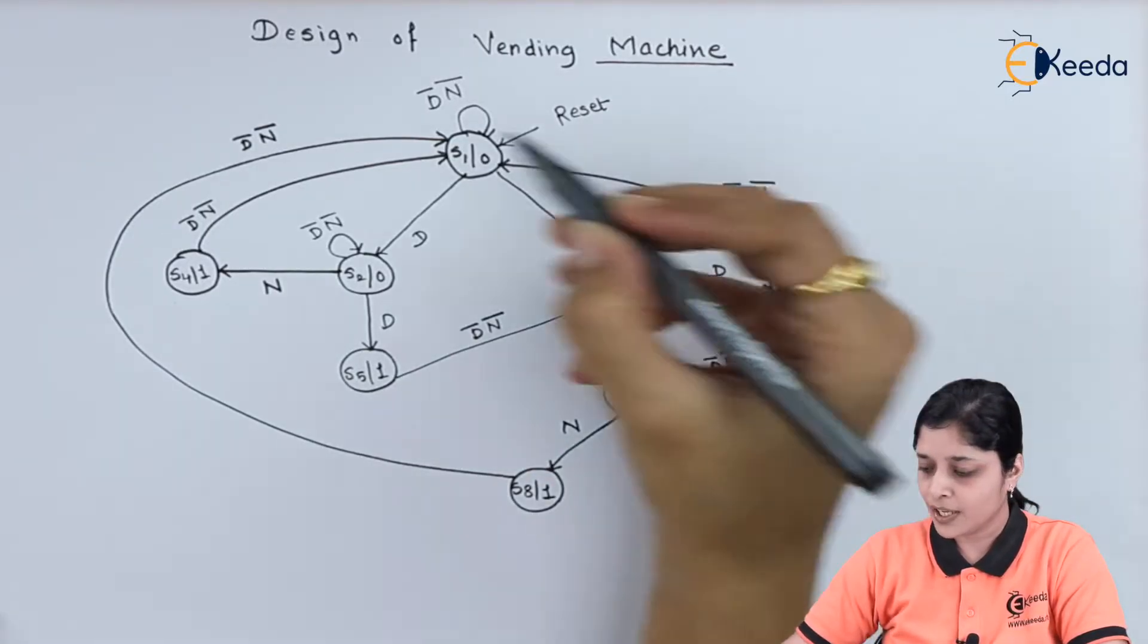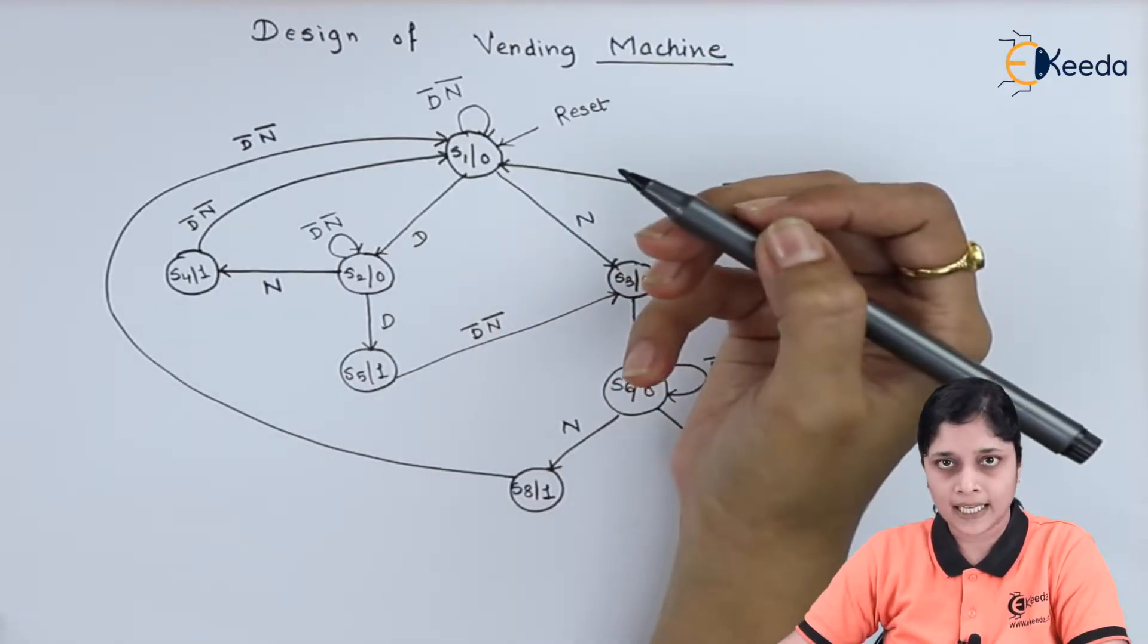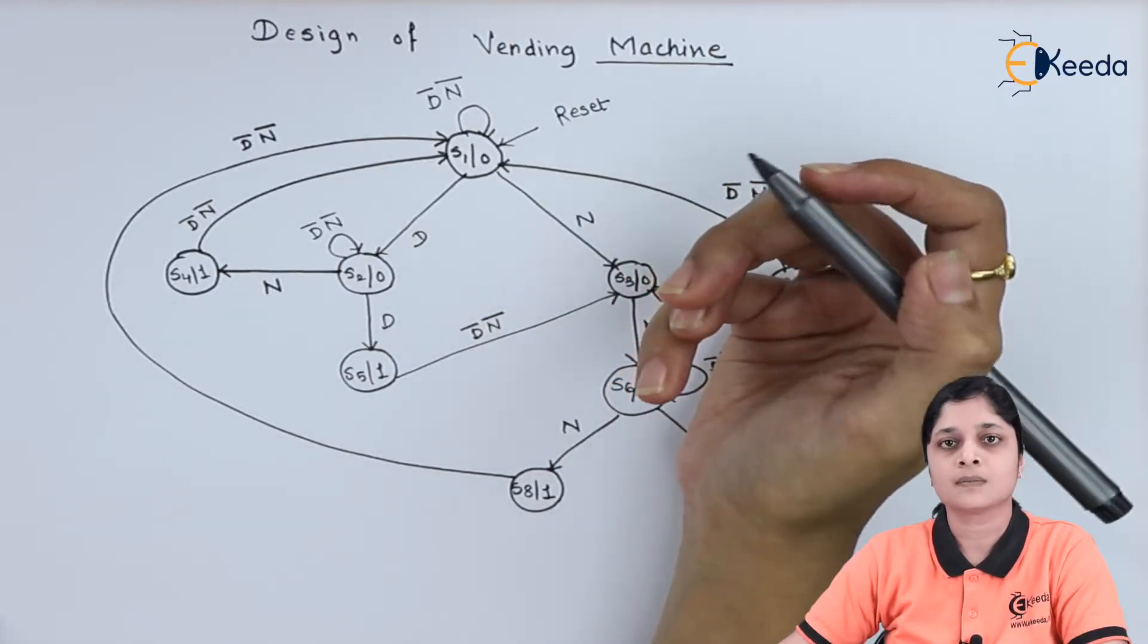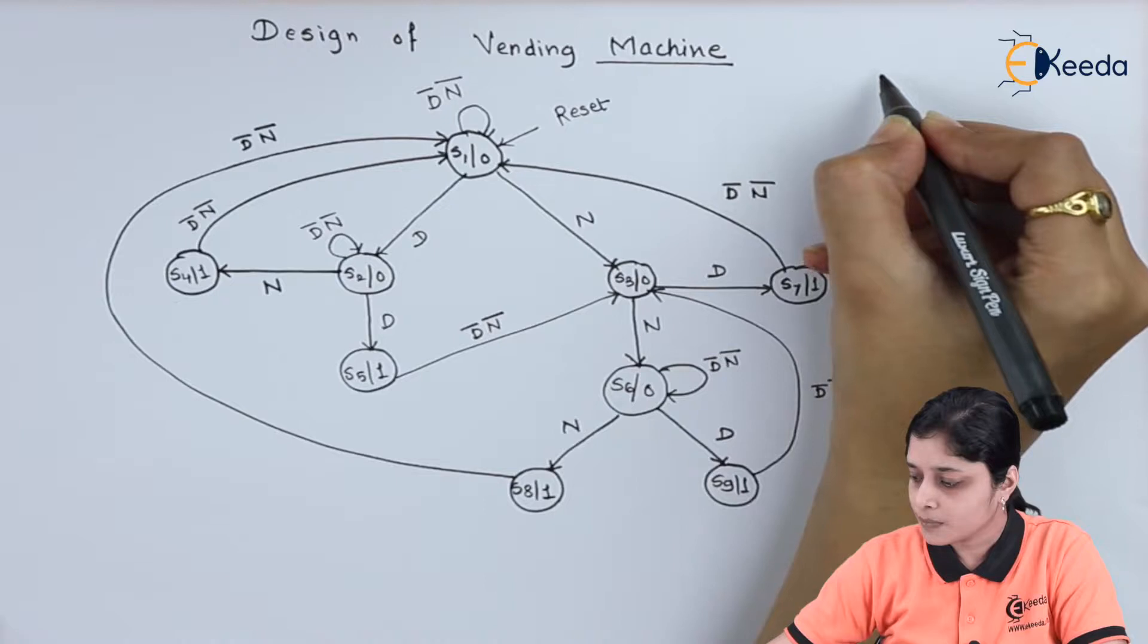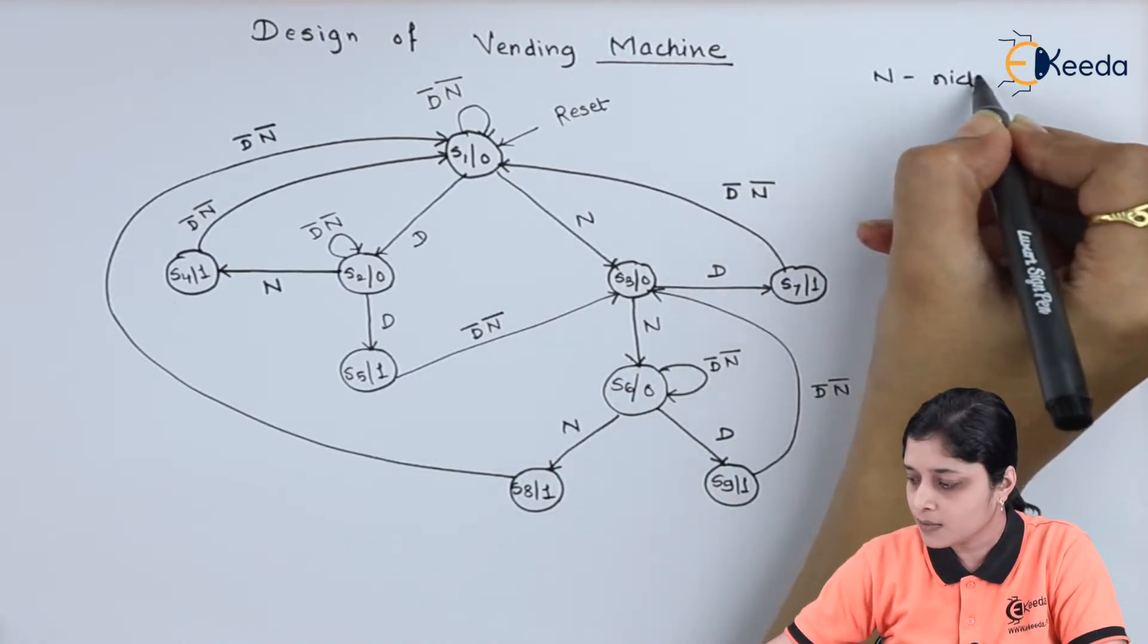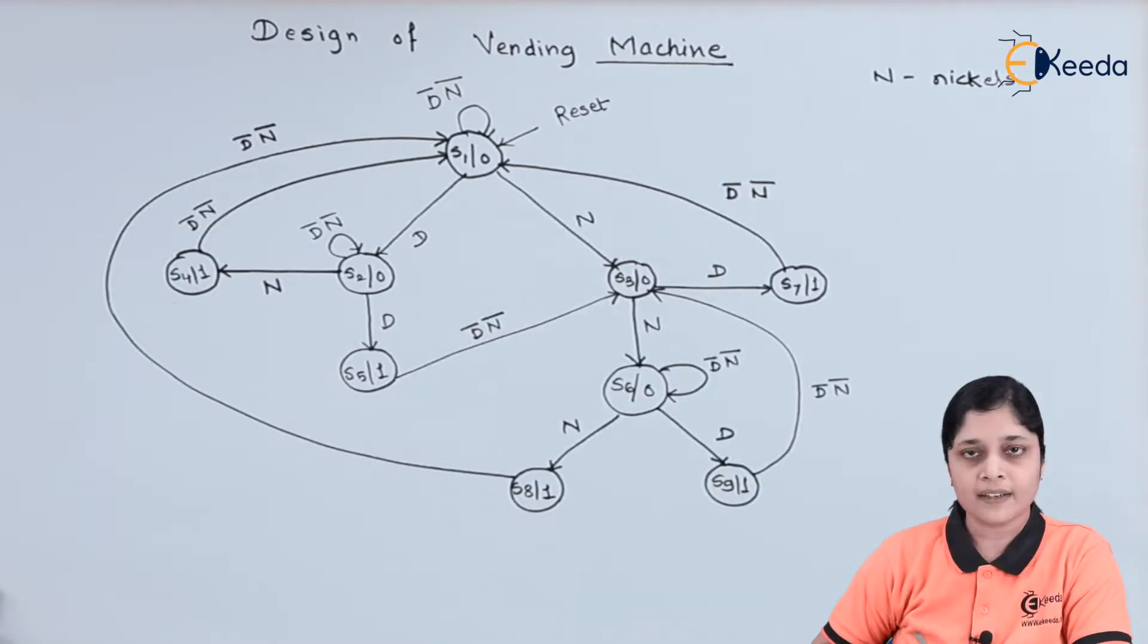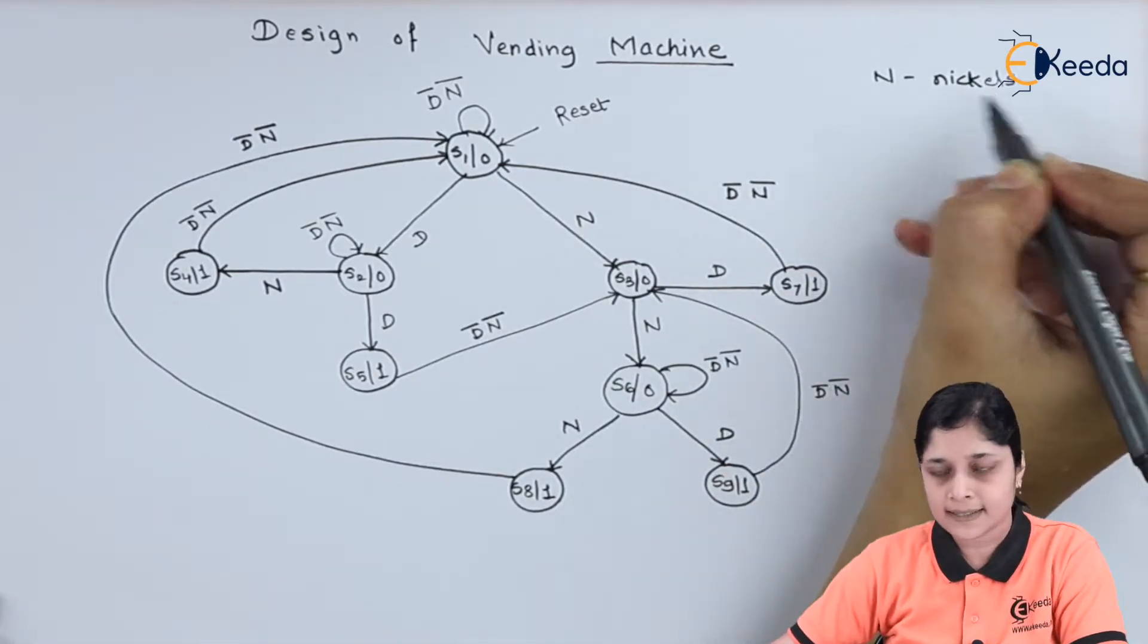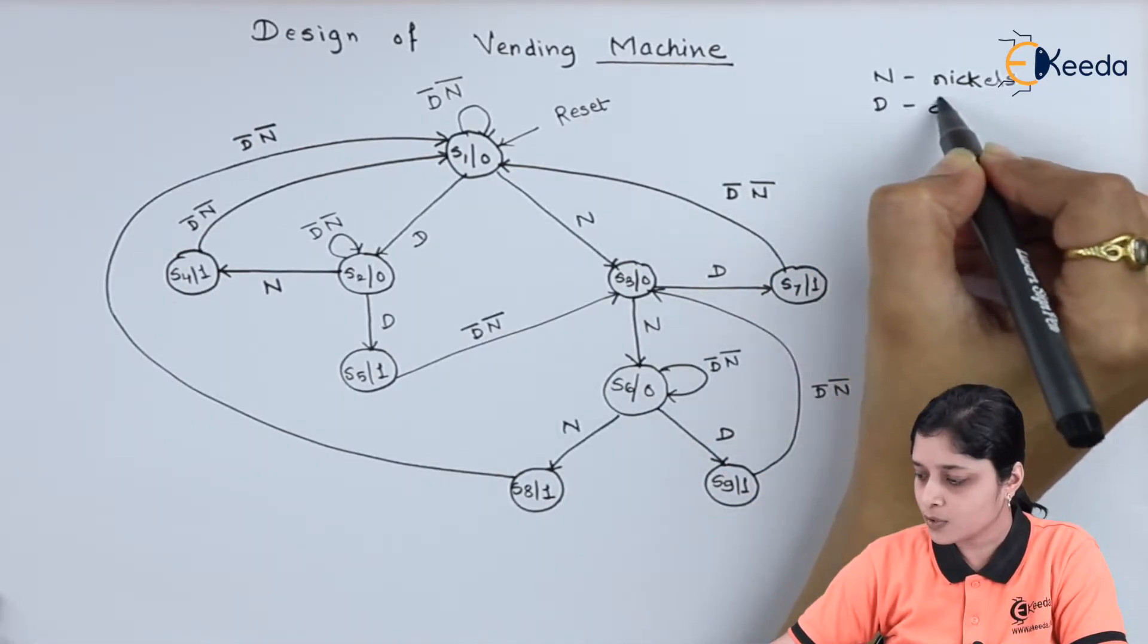According to this diagram, we have used variable d and n, where n is equal to nickels and d is equal to dimes.